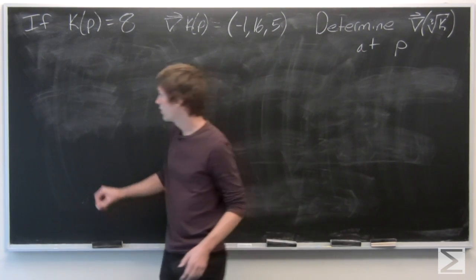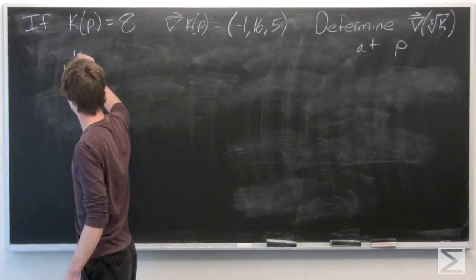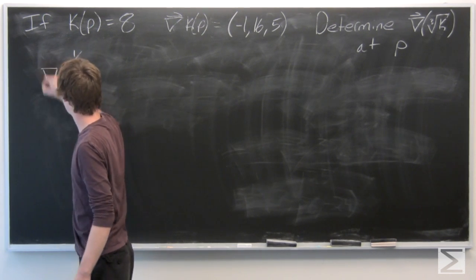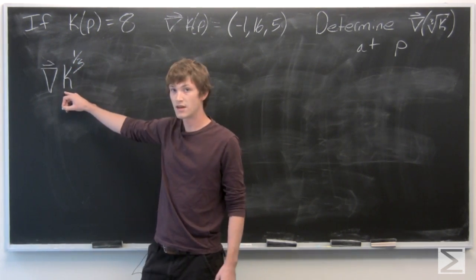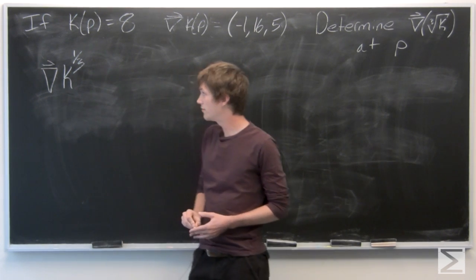So we can rewrite this as wanting to find the gradient vector of k to the power of 1 third at p.